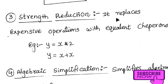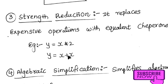The third type is strength reduction. Strength reduction replaces expensive operations with equivalent but cheaper ones. For example, y = x * 2 can be replaced with y = x + x. Multiplication by 2 is equivalent to adding x to itself, so we replace the star operator with plus. The benefit is that cheaper operations take less memory and execute faster.